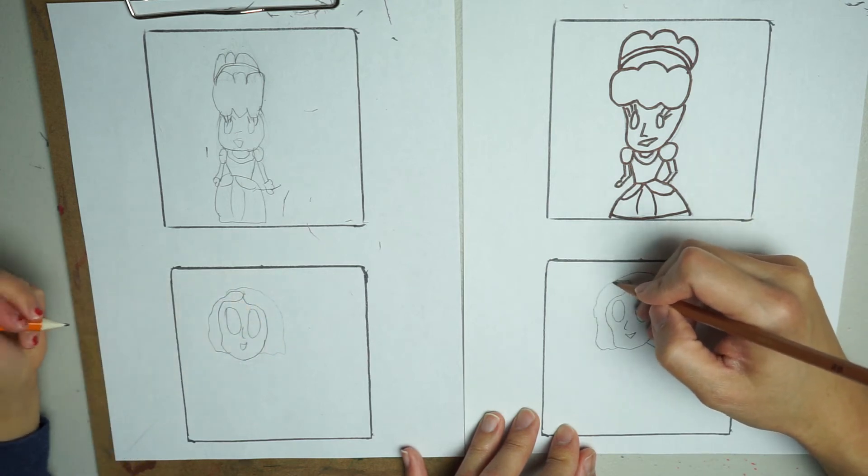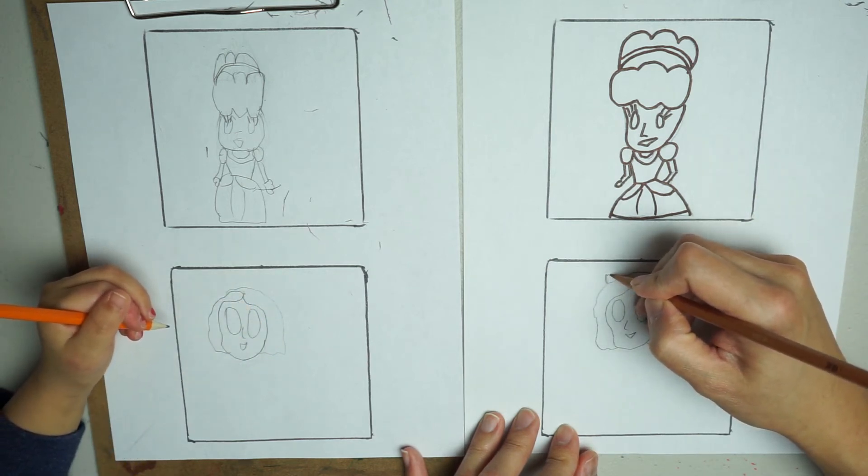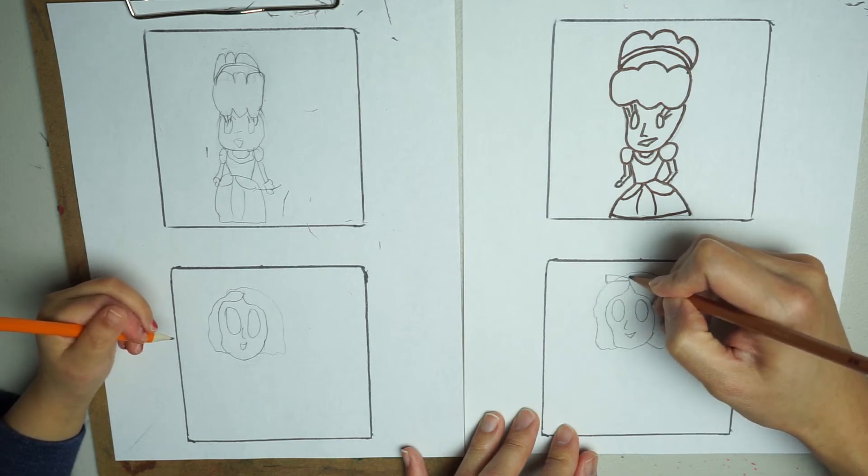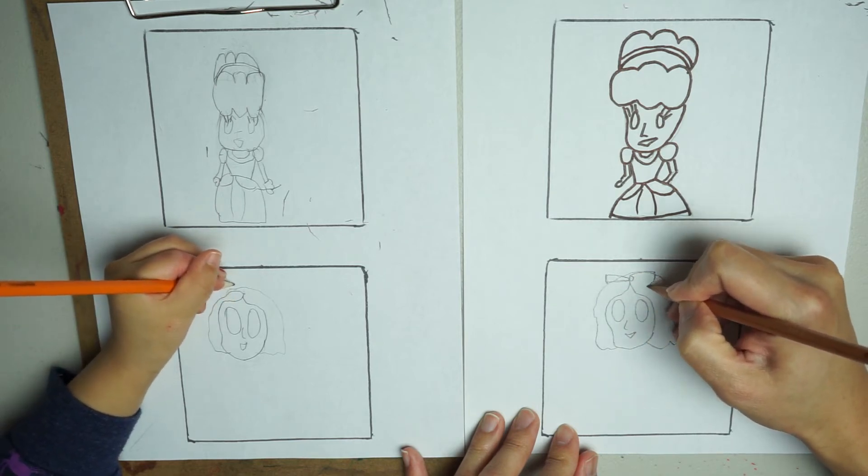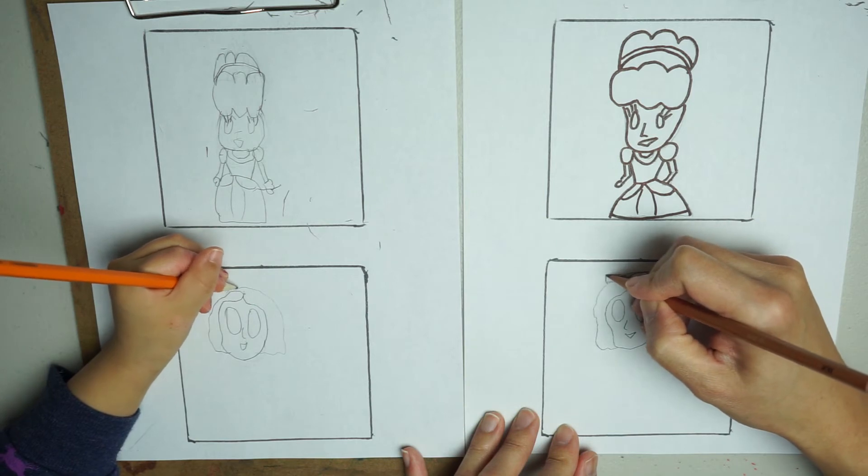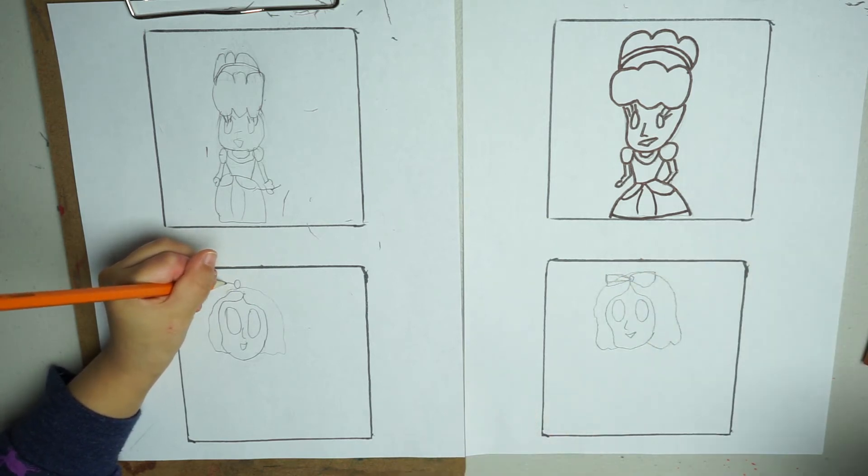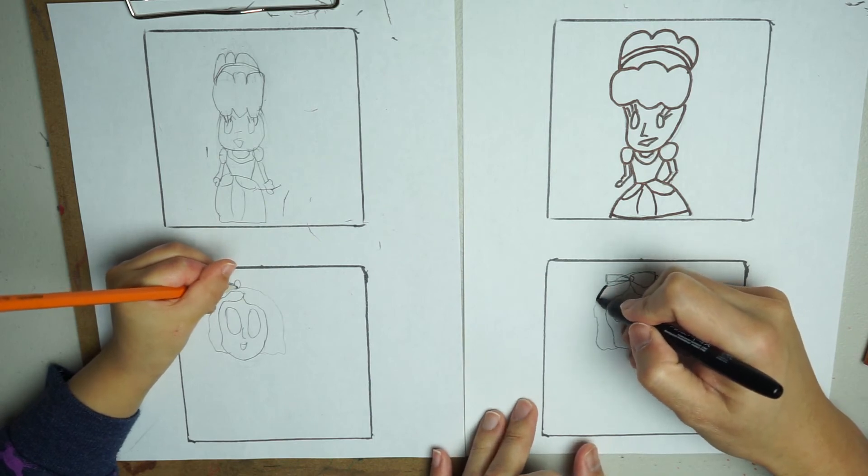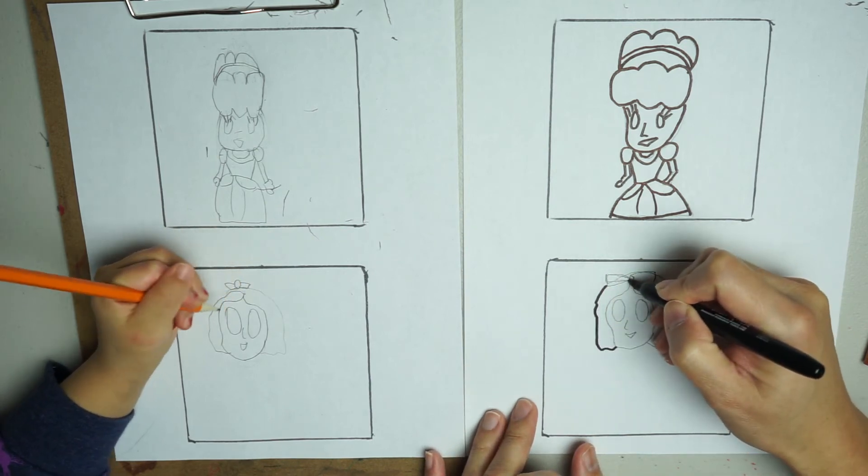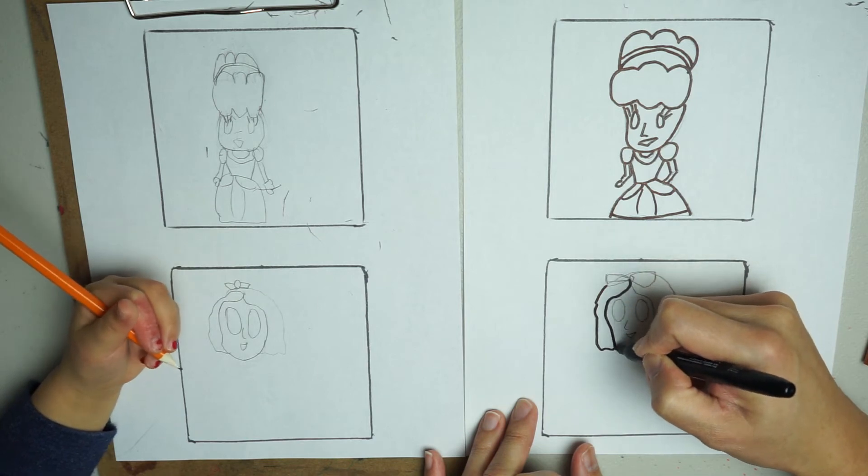And then we'll have a little bow here on top. So we just draw this in. On top. Okay. You draw the circle first. Then you can trace it in. Okay? I'm going to trace her face.